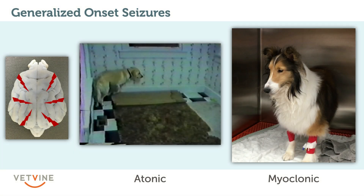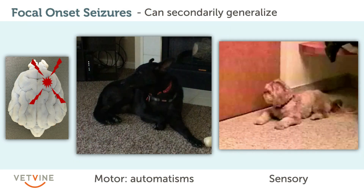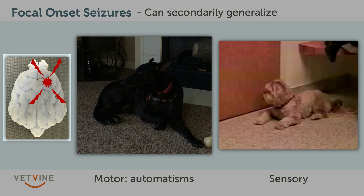Focal onset seizures, as the name implies, originate from a focal region of the brain, and the manifestations depend on what that region controls — the function of that brain region. It should be noted that focal onset seizures can secondarily generalize, so sometimes there'll be a brief period with lateralizing signs — signs on one side of the body or involving a specific area — but then it can rapidly become a generalized tonic-clonic seizure.